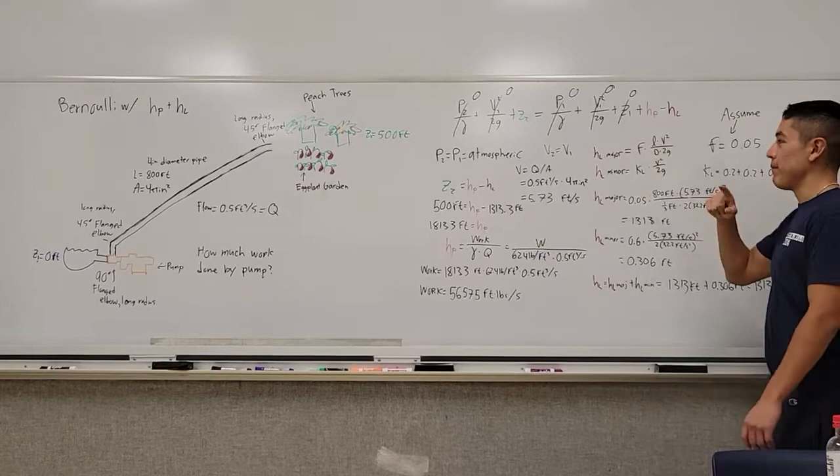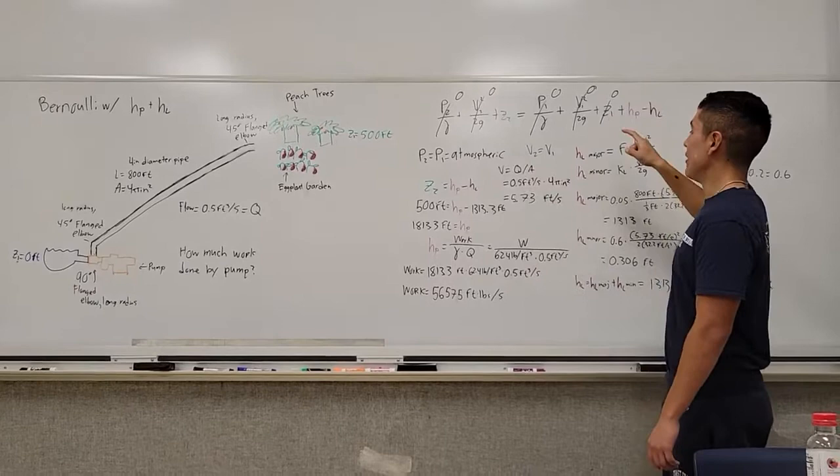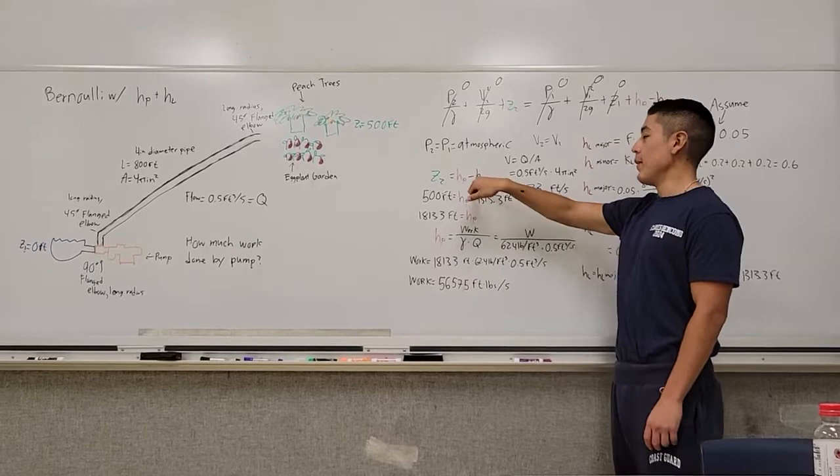I have this equation set up, and we have P2 equals P1, so those cancel out. And Z1 equals zero, so we end up getting Z2 equals head pump minus head loss.